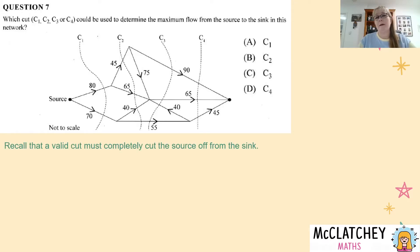So firstly you need to remember when you're inspecting this particular network that a valid cut must completely cut the source off from the sink. Source on the left and sink on the right. So if we have a quick look at every one of these cuts they actually completely cut that flow through the network. So if that was for example pipes being cut then there'd be no flow to the other end. Nothing would come through to the sink so they're all valid cuts.